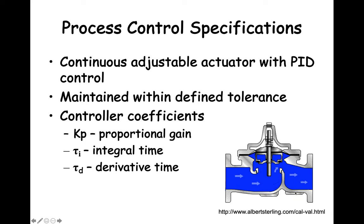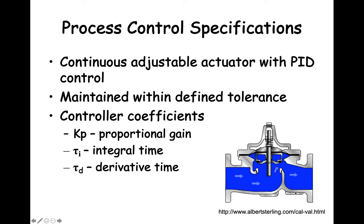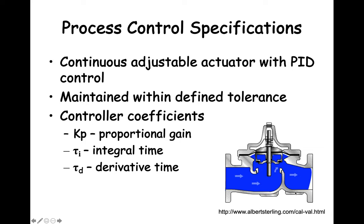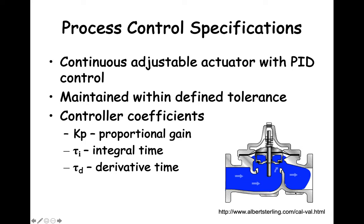Within this course, the variables we can adjust when we use PID control are the proportional gain Kp, the integral time tau i, and the derivative time tau d. So how do we find the setting for Kp, tau i, and tau d to get good PID control? The selection of these values is called controller tuning.